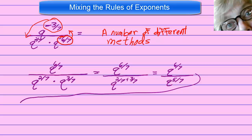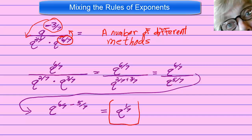Now we're dividing like bases, so we're going to subtract the exponents. q to the six-sevenths minus five-sevenths, and that's going to equal q to the one-seventh. That will be our final answer. When you start with exponential notation, you end with exponential notation.